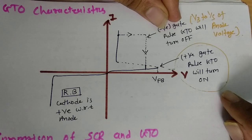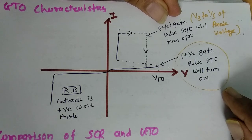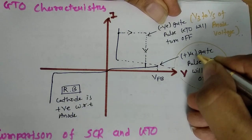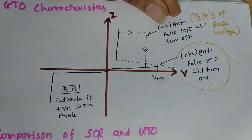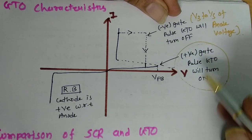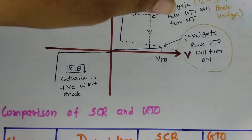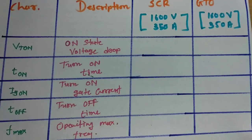GTO functions as a fully controlled switch using gate signals. The turn-on process is done by a positive gate pulse and the turn-off process by a negative gate pulse. However, GTO's turn-on process is not as reliable as SCR. Let us now compare SCR and GTO to clarify where each should be used.